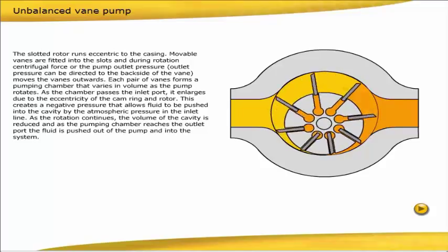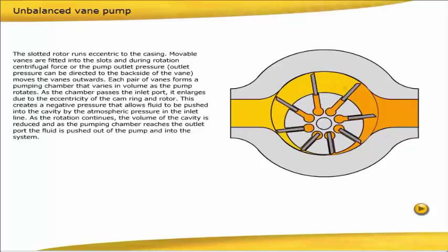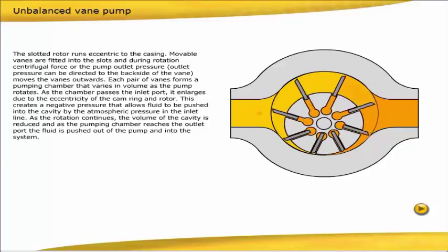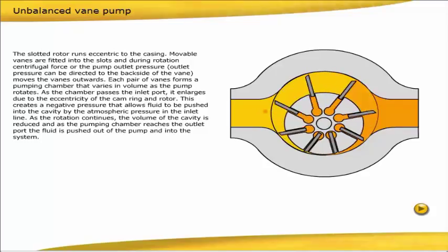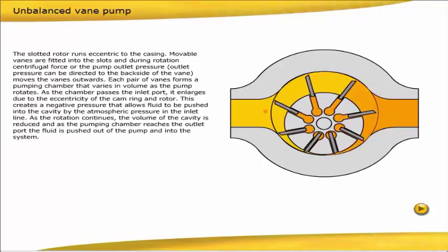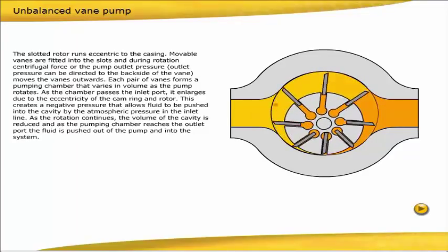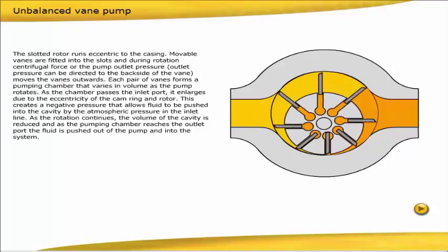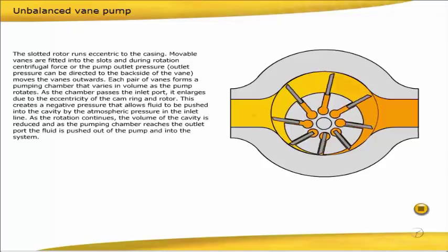As the chamber passes the inlet port, it enlarges due to the eccentricity of the cam ring and rotor. This creates a negative pressure that allows fluid to be pushed into the cavity by the atmospheric pressure in the inlet line. As the rotation continues, the volume of the cavity is reduced, and as the pumping chamber reaches the outlet port, the fluid is pushed out of the pump and into the system.